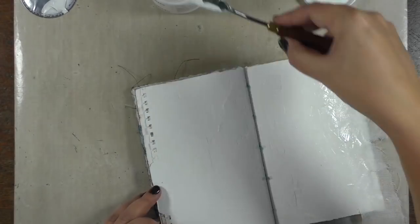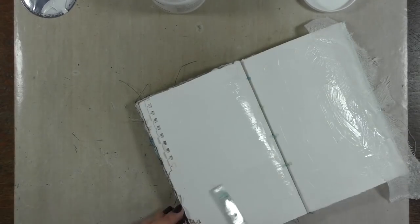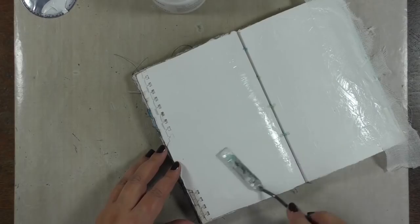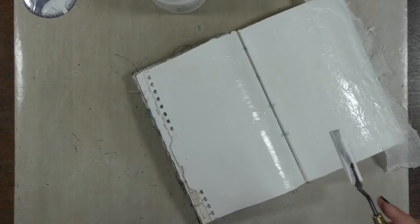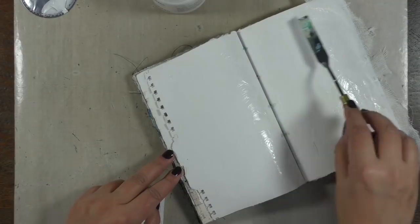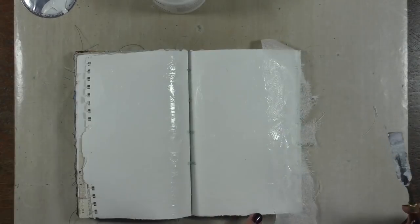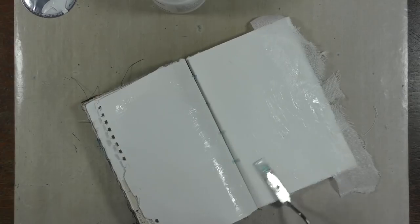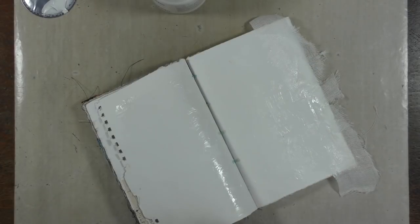And yes, I'm doing both sides, because I want the other side to react in the same way to the paints that I'm going to apply as the right side. I'm not smoothing it down using my palette knife. On the contrary, I'm trying to add a bit more texture to the modeling paste.